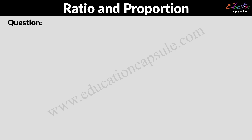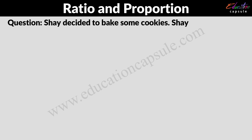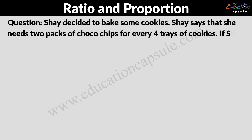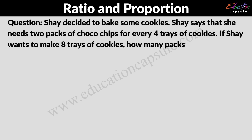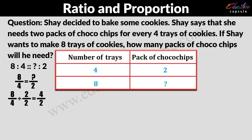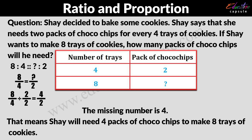Let's try a question. Shay decided to bake some cookies. Shay says that she needs 2 packets of choco chips for every 4 trays of cookies. If Shay wants to make 8 trays of cookies, how many packets of choco chips will she need? We'll calculate this based on the ratio. From this table, we can say that 8 ratio 4 is proportional to something ratio 2, or 8 out of 4 is the same as something out of 2. The missing number is 4, meaning Shay will need 4 packets of choco chips to make 8 trays of cookies.